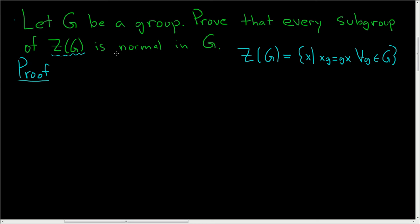And so what does normal mean in this case? Well, a subgroup H of G is said to be normal in G. We use this funny triangle. This is true if and only if, for all little g in capital G and for all little h in capital H, we have ghg inverse also residing in capital H.